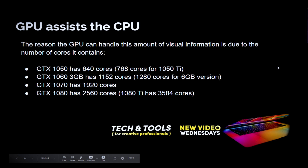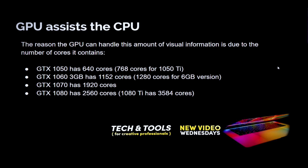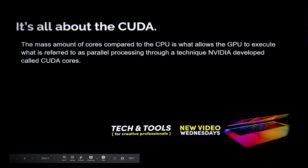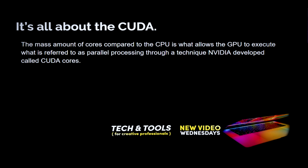The reason the GPU can handle this amount of visual information is due to the number of cores it contains. Here's a quick reference of the 10-series graphics processing units from NVIDIA and how many cores they have. A lower-end GPU contains around 640 to 770 cores, allowing the GPU to execute what is referred to as parallel processing through a technique NVIDIA developed called CUDA cores. Rather than a CPU having six main powerful cores that attack operations one at a time, the GPU attacks many more computational tasks at once — more cores equals more workers. The CPU is like the general contractor planning the building of a large dam, and the GPU is the 750 workers all working at the same time to get it done in a fraction of the time.